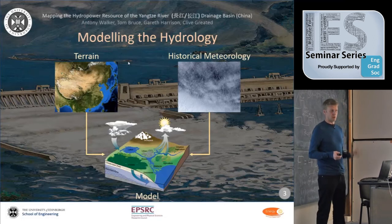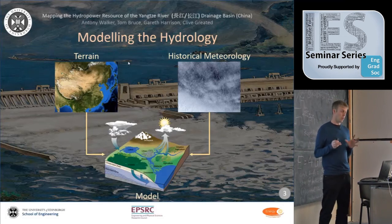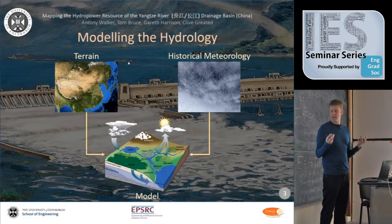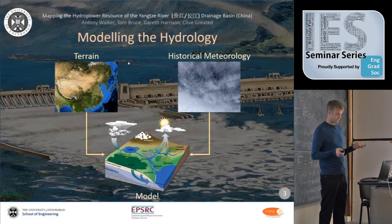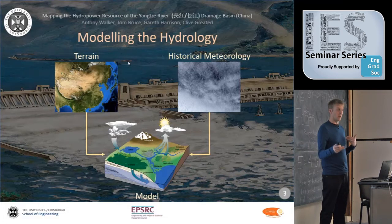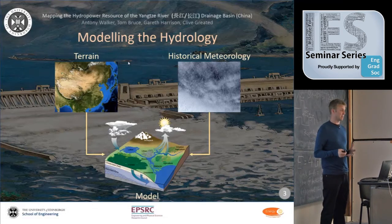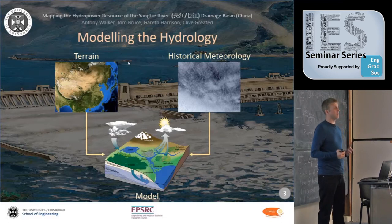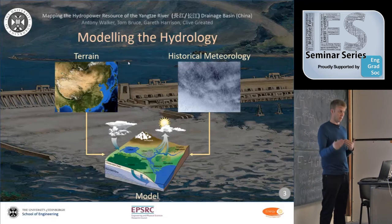The project aims to model the hydrology of the Yangtze drainage basin, which we then use to search for hydropower locations. Modeling the hydrology has three key components: first, digitizing the terrain and river network; second, meteorological data — we've gone back to the 1970s for a long time series of temperature and precipitation; and third, a flow model describing how water moves across the terrain.